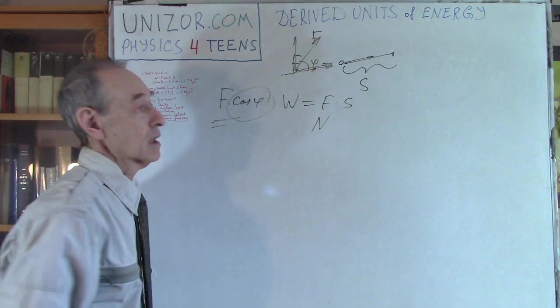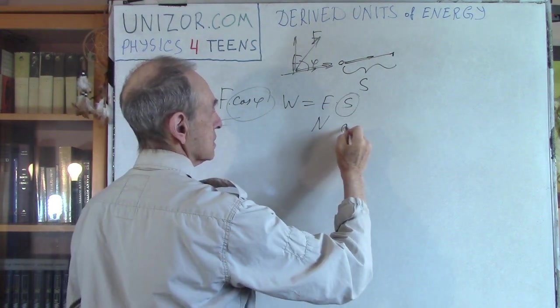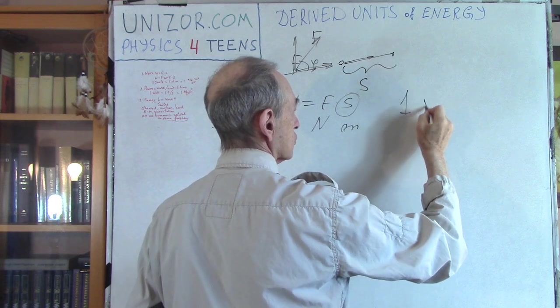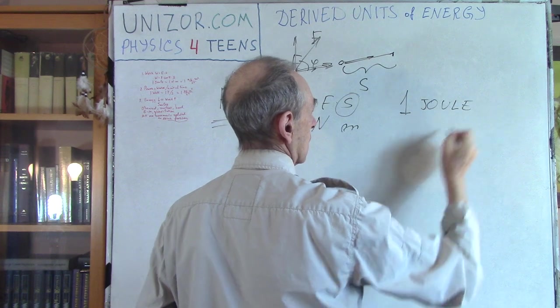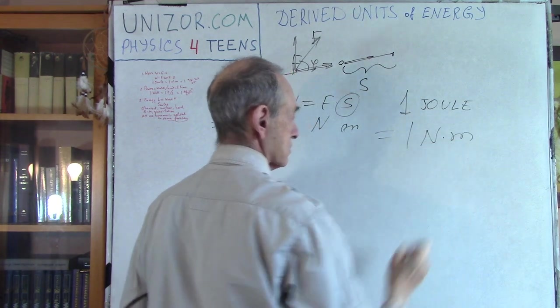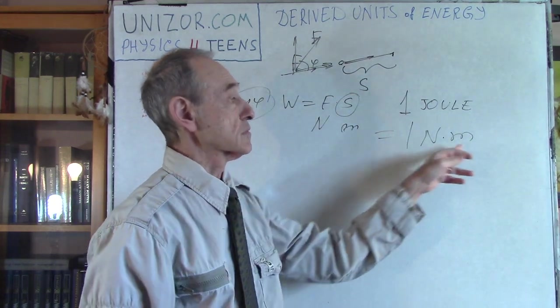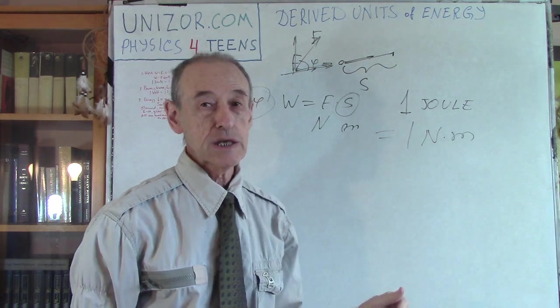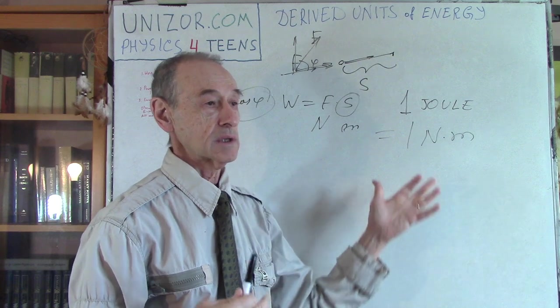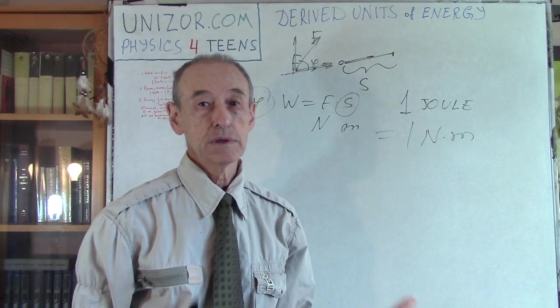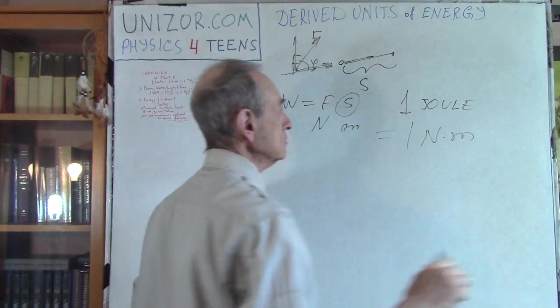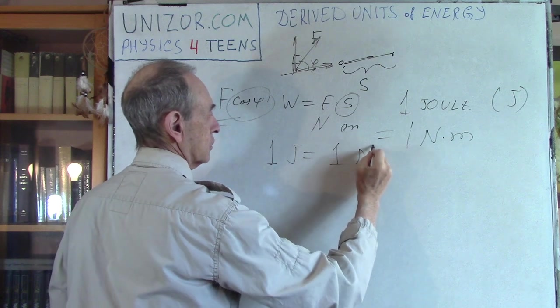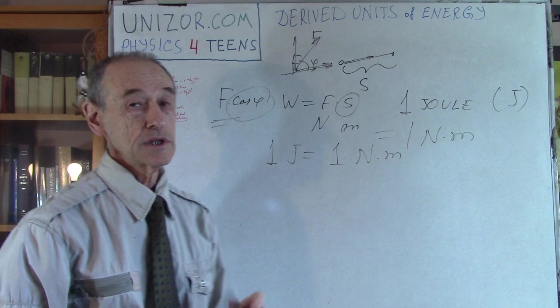Force is in newtons and the distance is in meters. What was actually decided was that we will introduce a unit and we will call it a joule, which is equal to one newton times meter. If it's one newton times one meter, or half newton times two meters, or whatever else, it will give you one joule. Whenever the multiplication of force in newtons and distance in meters is equal to one, that's the work of one joule. Abbreviation is J, capital J. One J is equal to one newton times meter. That's the definition of the unit of work.